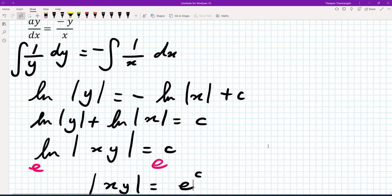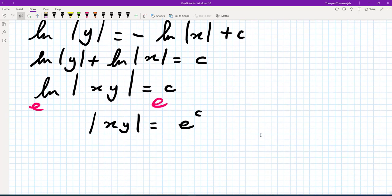Now what I'm going to do, I'm going to call e to the power of c a constant because that's what it is. So we're going to say where e to the power of c is some general constant a.